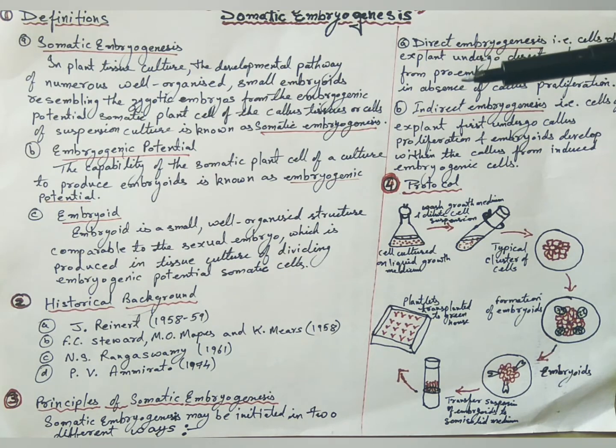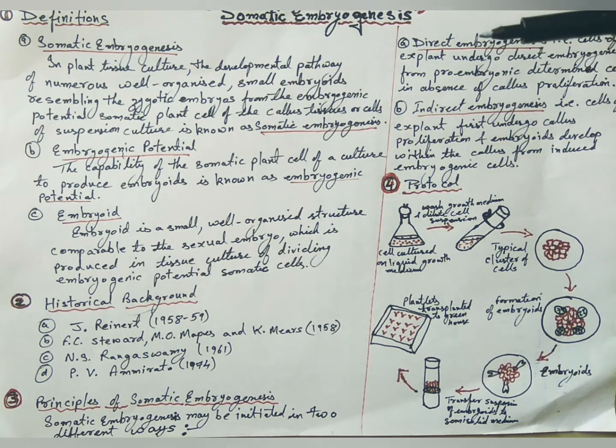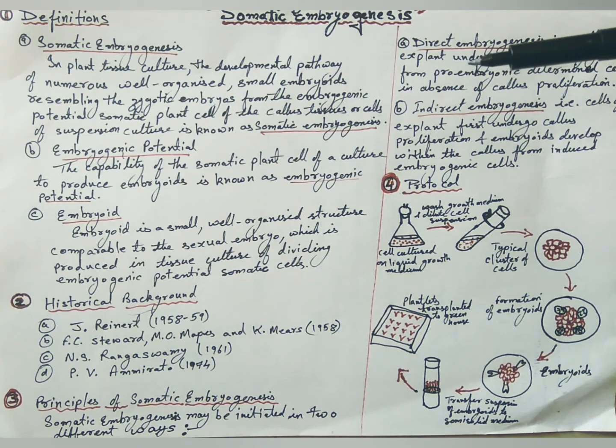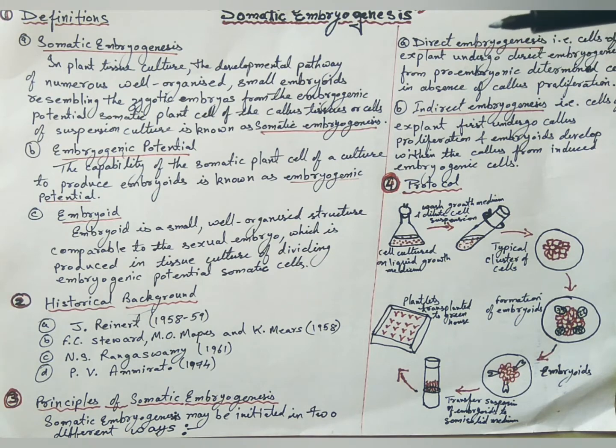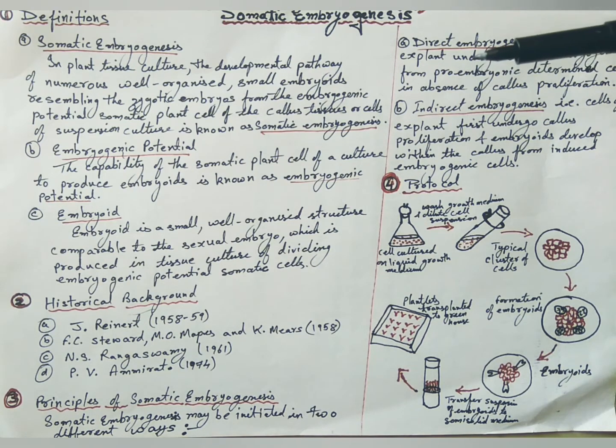The zygote gives rise to a multicellular embryo. Embryos derived in this sexual process are known as zygotic embryos, and the process of embryo development is called embryogenesis.